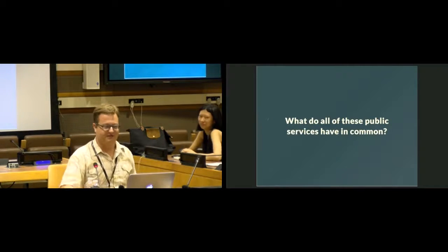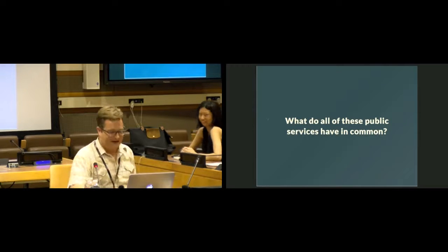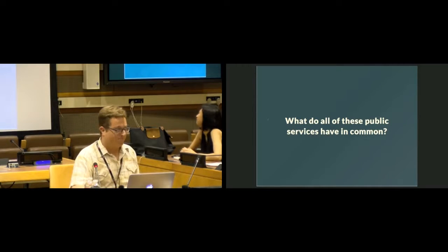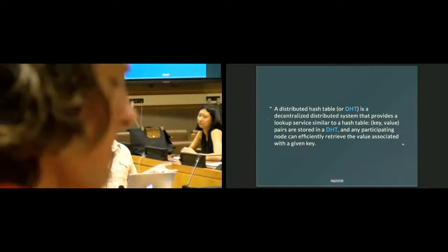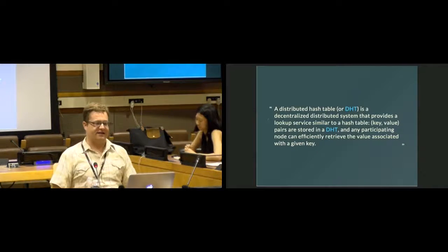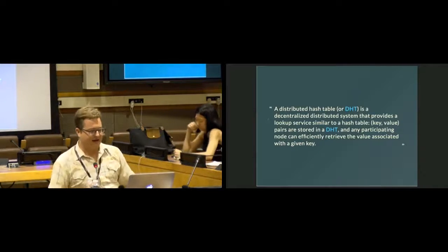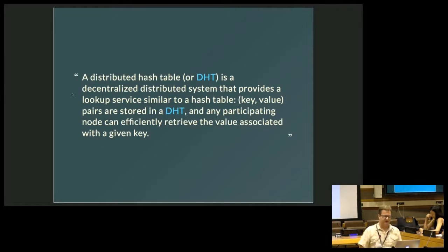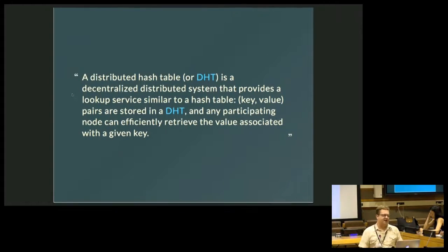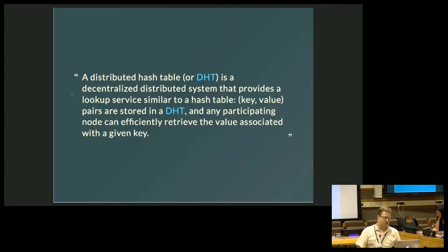So what are all these public services — what do they have in common? Well, they all use DHTs. A distributed hash table or DHT is a system that provides a lookup service similar to a hash table. We have a key and a value pair that are stored in a distributed fashion across many nodes, and any participating node can effectively retrieve the value associated with any given key.